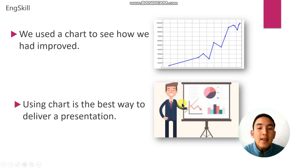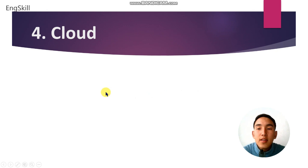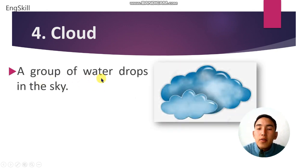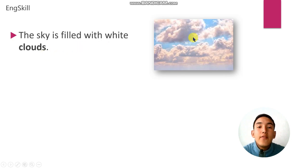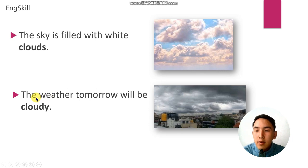Word number 4 is cloud. Cloud is a group of water drops in the sky. This is a cloud. For example: the sky is filled with white clouds. Another example: the weather tomorrow will be cloudy.